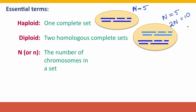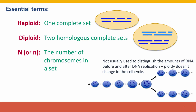One important point: the concept of ploidy is not used to distinguish between the amounts of DNA in the cell before and after DNA replication. Looking at this cell, we can say it must be haploid — because it's drawn with only 3 chromosomes, an odd number, so it couldn't be diploid, and because the 3 chromosomes are all different lengths.